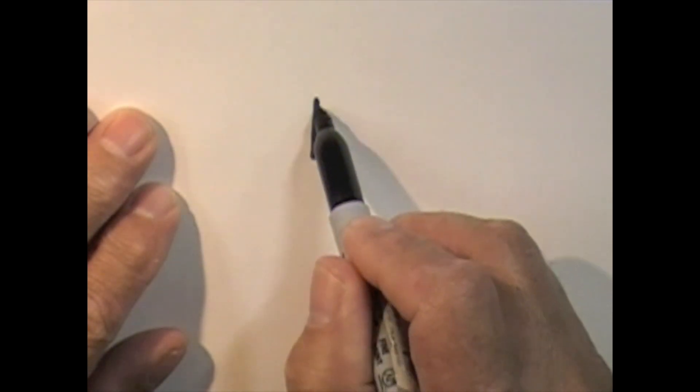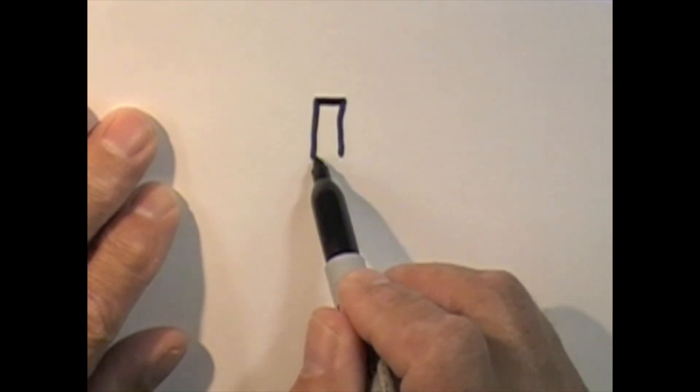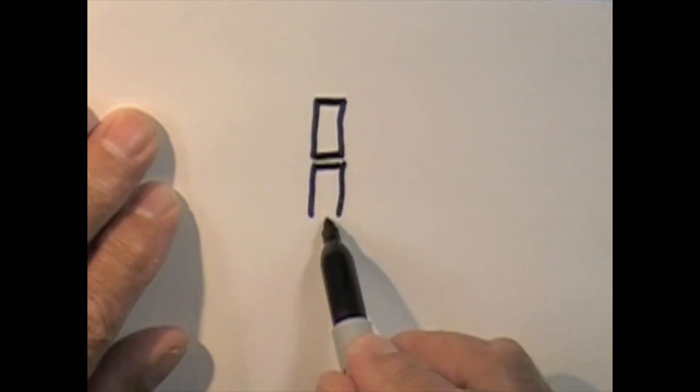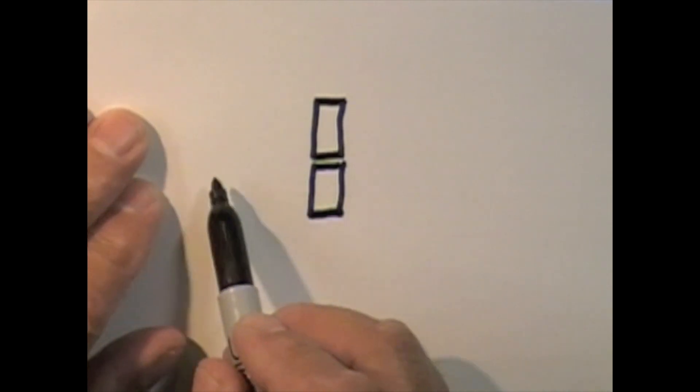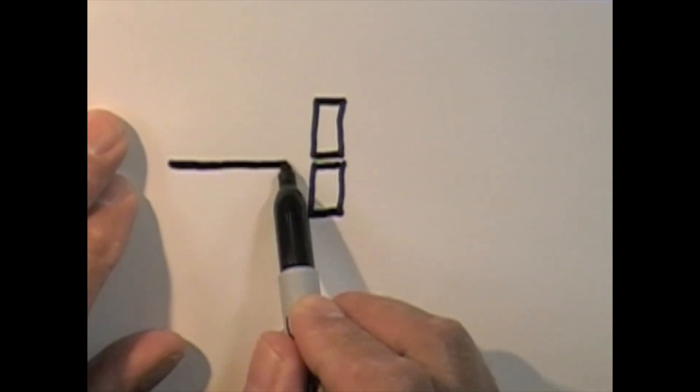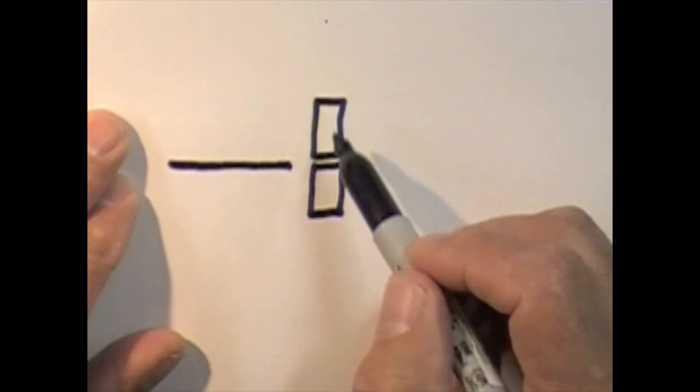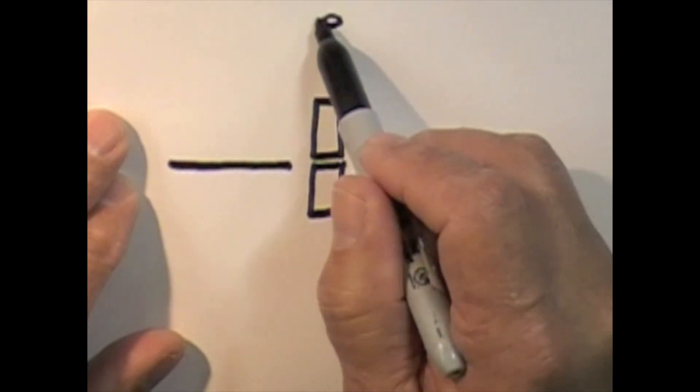Now in shimming the lock what we're going to do is we're going to push this shim stock between the top pin and the bottom pin. So we're all familiar with the pin stacks. We have a bottom pin, a top pin and then there will be a spring.